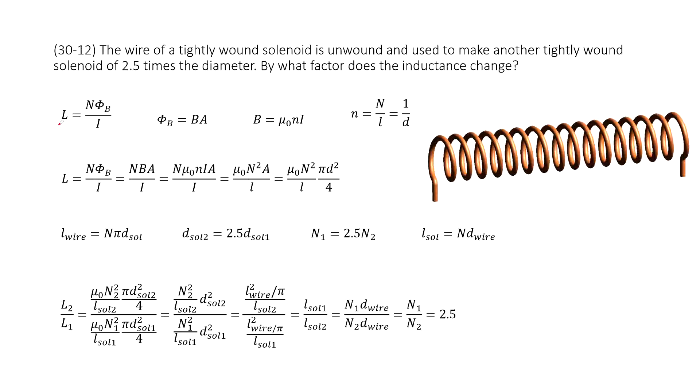So we write down the definition for inductance. This is n, how many turns on this solenoid. And this is Φ_B magnetic flux. This is the current that goes through these wires.